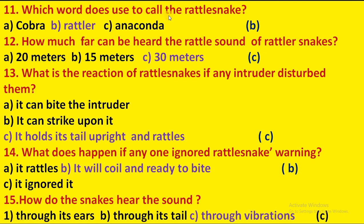Which word is used to call the rattlesnake? Rattlesnake ko bolne ke liye kaun sa word use kiya jata hai? Options: cobra, rattler, anaconda. Option B: rattler. How far can the sound of a rattlesnake be heard? Options: 20 meters, 15 meters, 30 meters. Option C is correct: 30 meters.